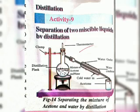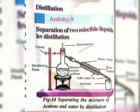Water remains in the distillation flask. The separation technique used here is called distillation. Distillation is used in the separation of components of mixtures containing two miscible liquids, but there should be a large difference in the boiling points of the two liquids.